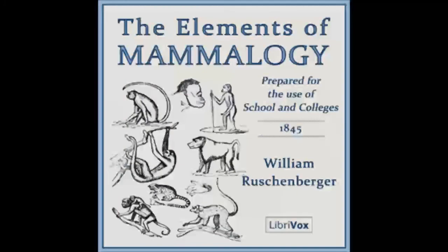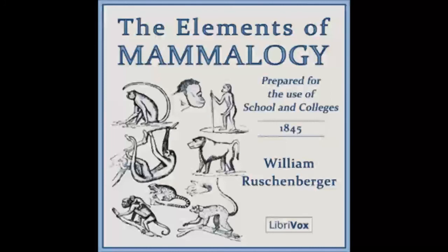The animals of the same genus, for example, will differ much less from each other than those of two genera of the same family, and these latter will resemble each other much more than those belonging to different orders, and in a still stronger degree than those of different classes. The natural classification is, in a manner, a synoptical view of all the variations met with in the organization of animals, and in knowing the place which any animal occupies in such a classification, we know by it alone the most remarkable features of its organization, and the manner in which its most important functions are performed — that is to say, the most important part of its history, because its habits are always correspondent with its conformation.